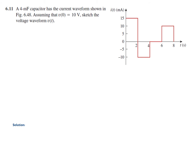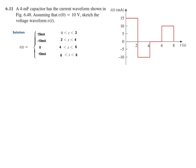First of all, we need to define the current — it's given as a graph, so we need to express it as equations in mathematical form. From time interval 0 to 2, the magnitude is 15 mA. From 2 to 4, it is −10 mA. From 4 to 6, it is 0. And from 6 to 8, it is +10 mA.